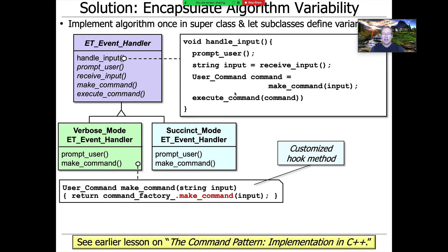Let's take a look at an example. Here is the make command method for verbose mode ET event handler. In this particular case, it's just calling down to the make command method that's part of the command factory. We talked about this when we covered the command pattern and factory method pattern.